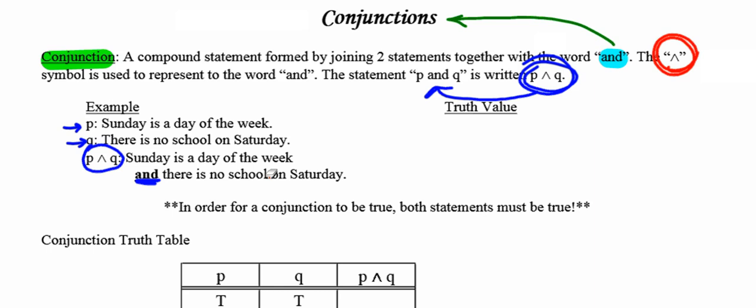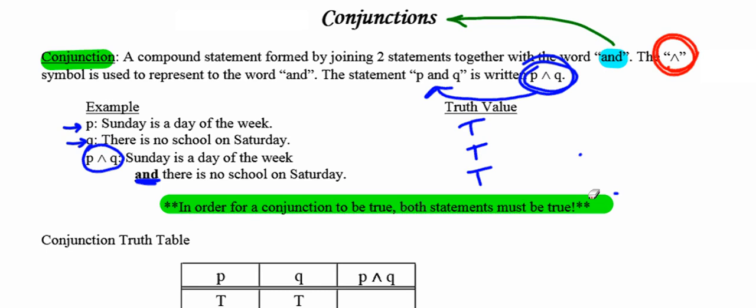Let's talk about truth values for these statements. Statement P — Sunday is a day of the week — is a true statement. Statement Q — there is no school on Saturday — is also true. Is it true that Sunday is a day of the week and that there is no school on Saturday? Yes, both are true, and therefore the conjunction itself is also true. A key idea: in order for a conjunction to be true, both statements must also be true.